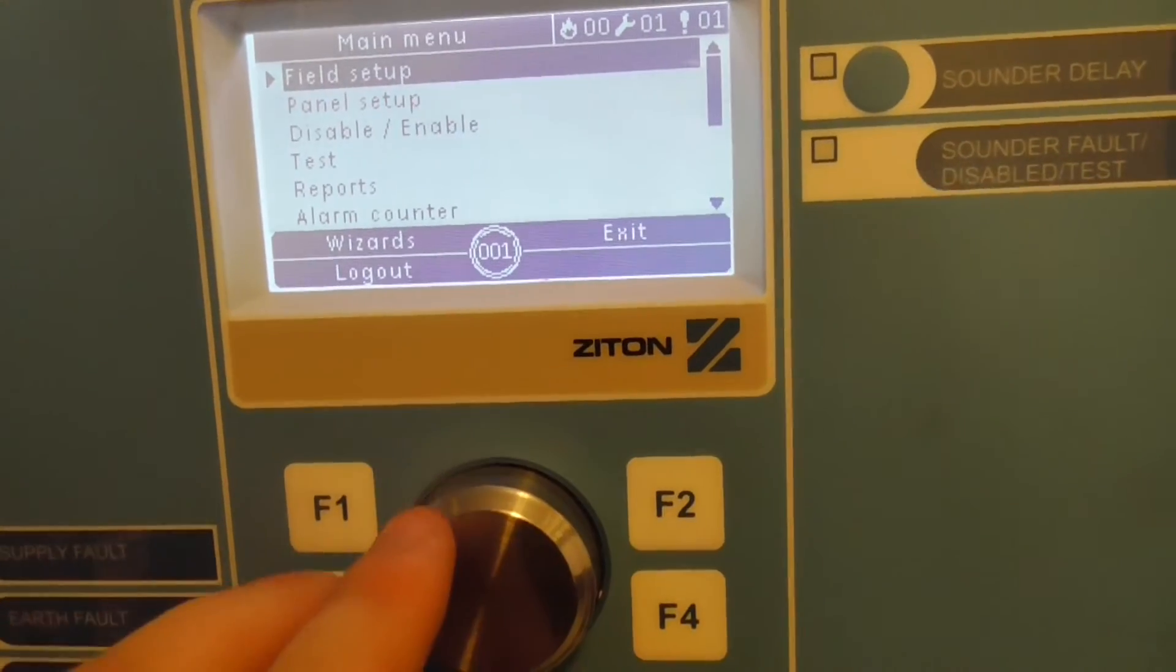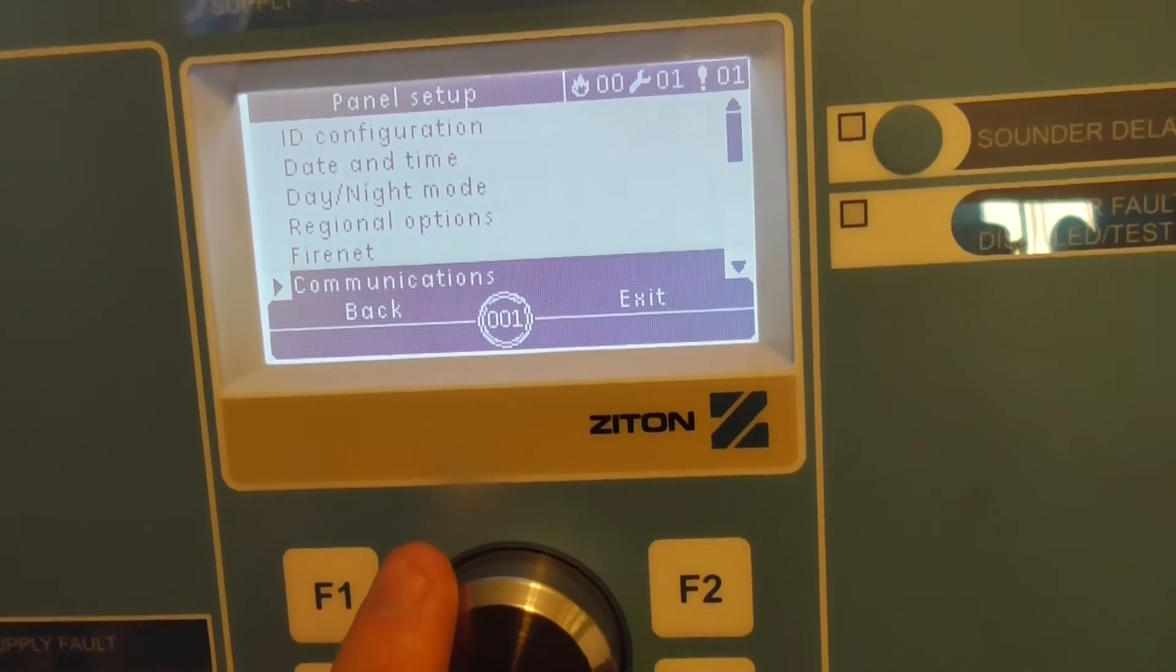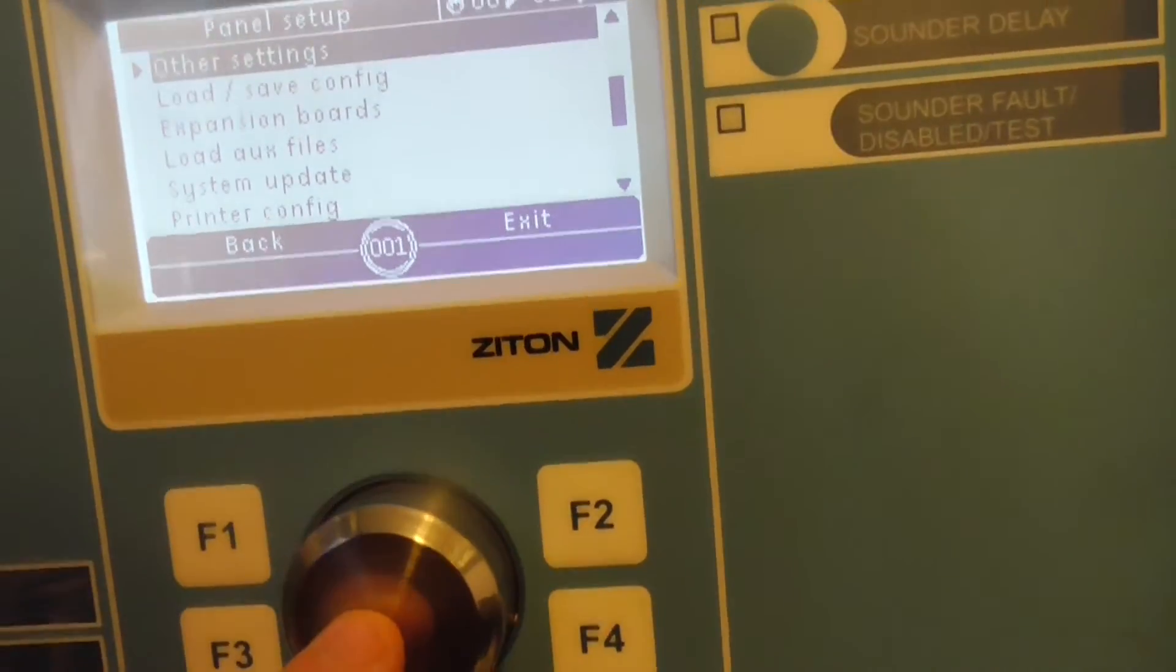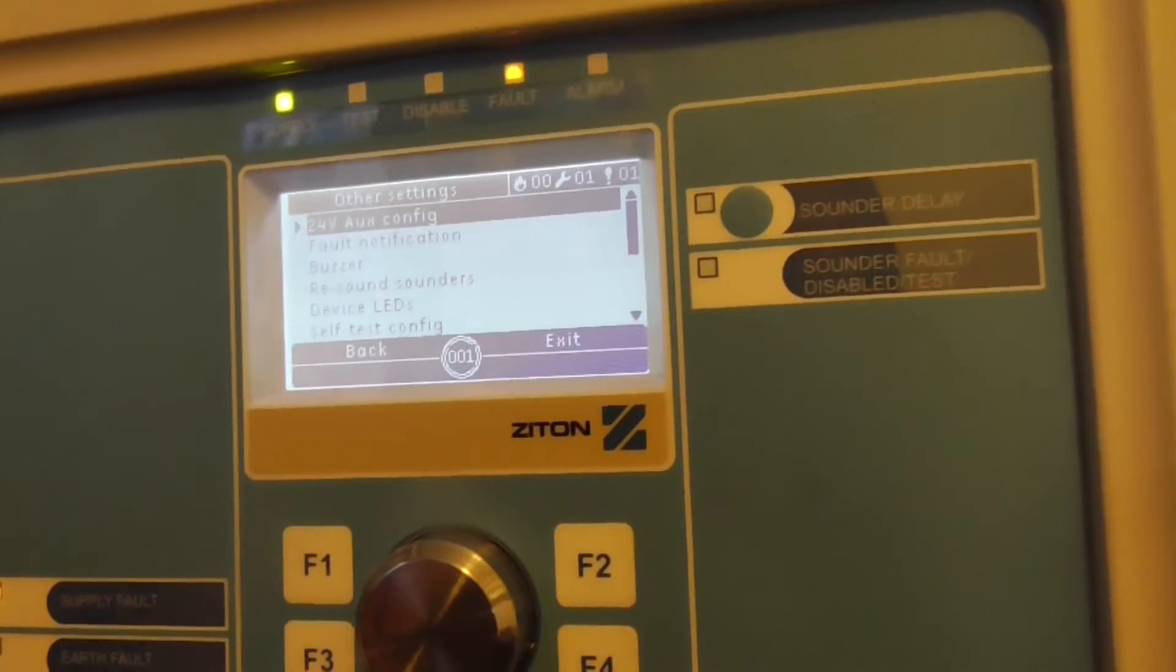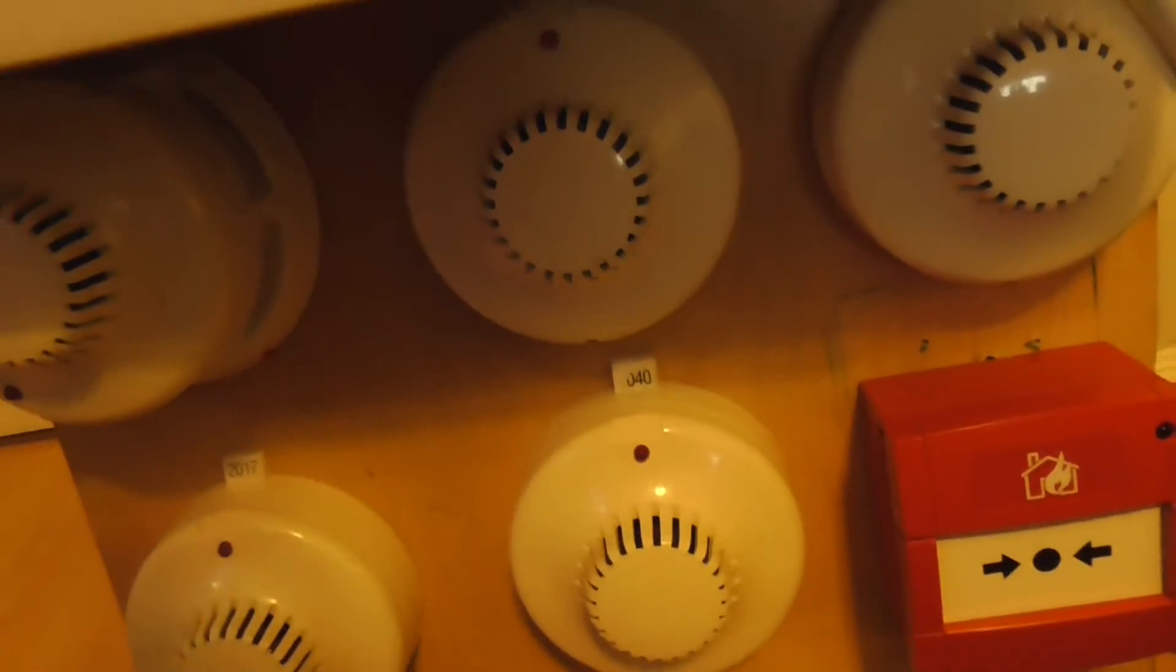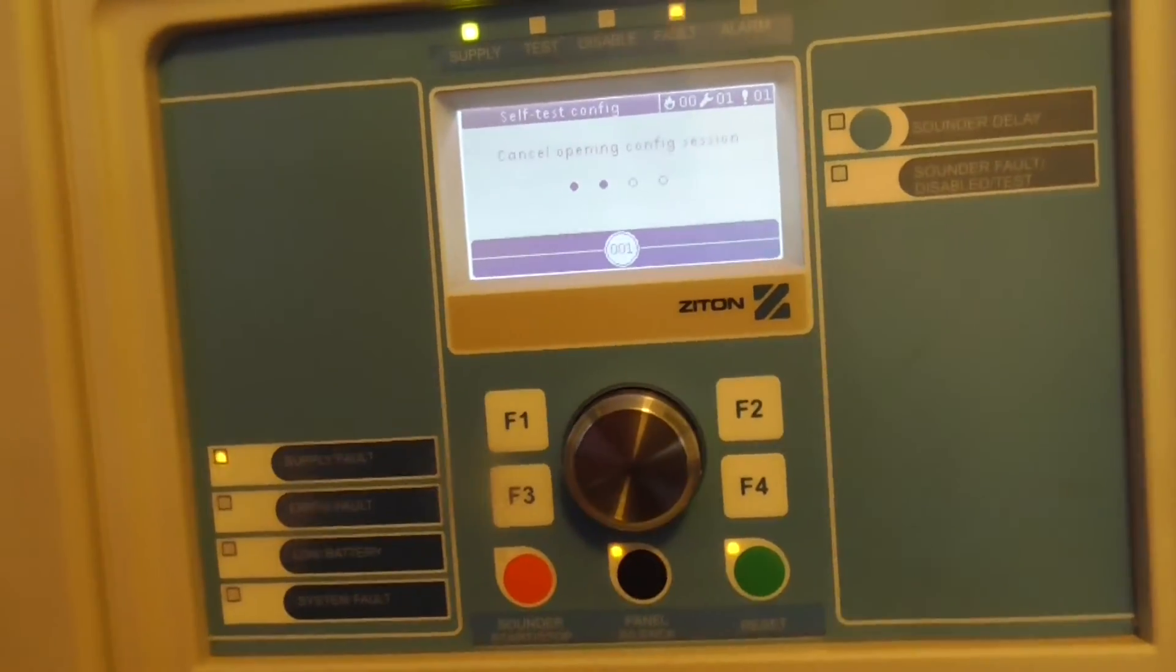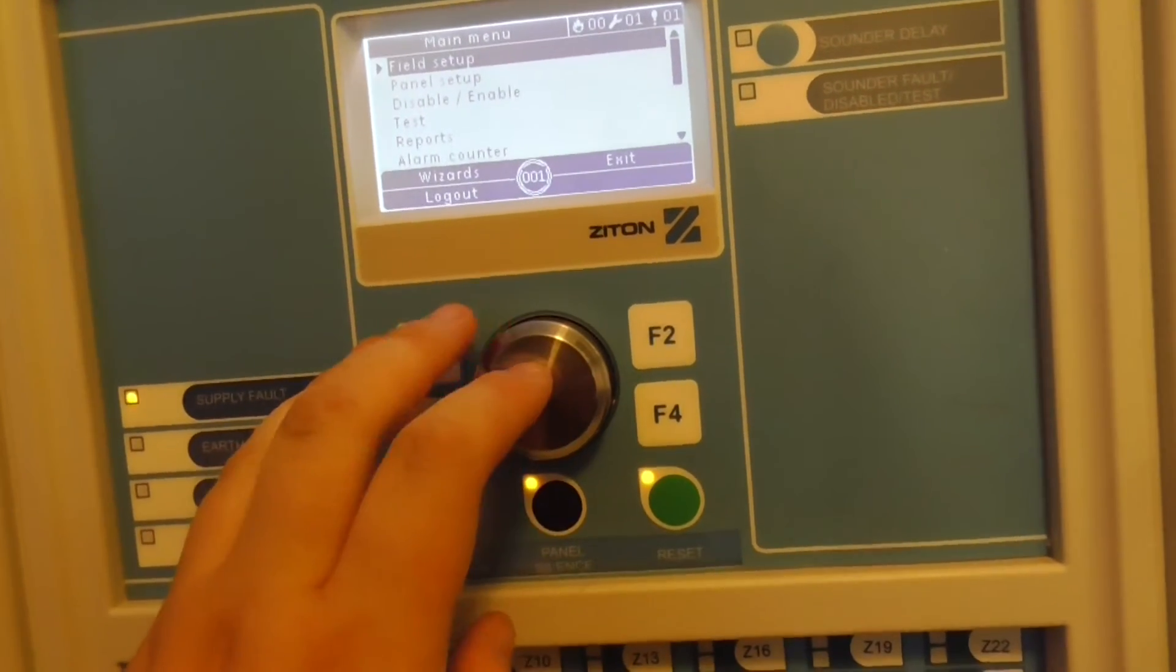If we go back to panel setup. Like I said, date and time and day and night mode will be sorted next test. ID config, I'm not sure what some of these do. We'll play around with this hopefully. Other settings. Let's press this one. I haven't pressed this one yet. 24 volts, aux config, fault notification, buzzer, resound sounders, and device LEDs. I'm not sure what this one is. I think you can disable the LEDs of the devices polling. That would be kind of cool, but I think I will keep the devices polling because they look kind of nice polling together.